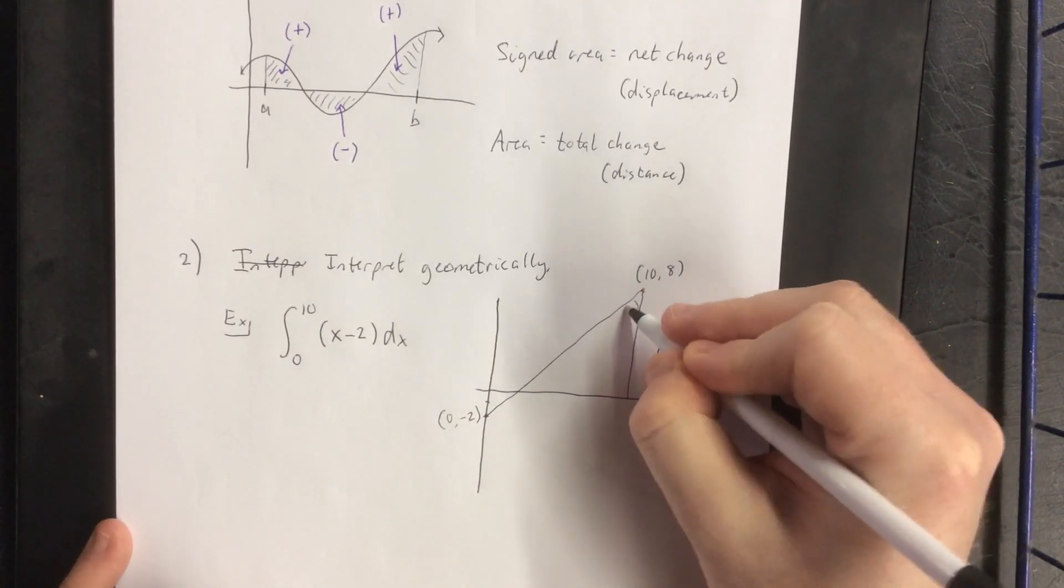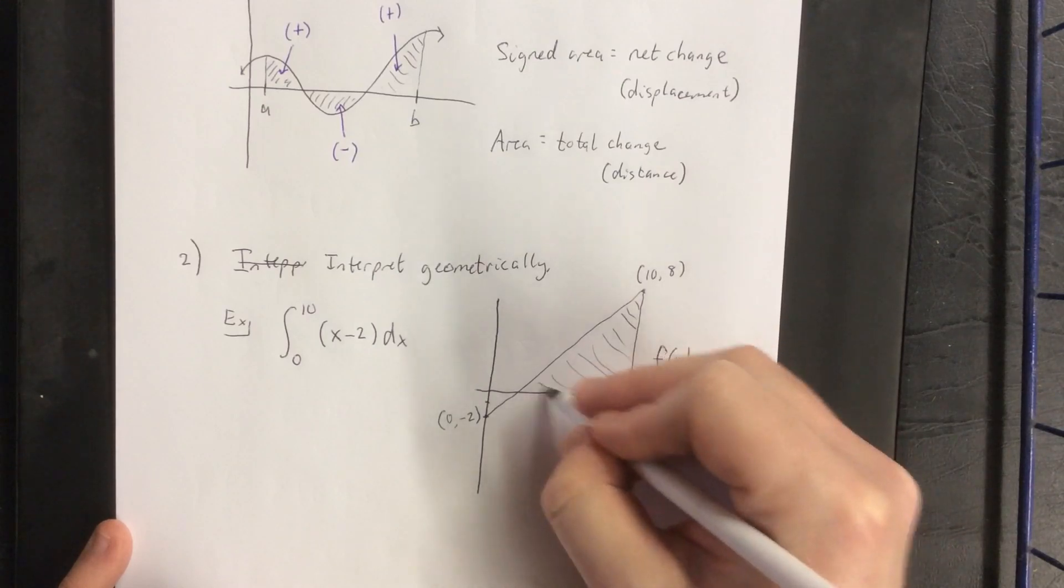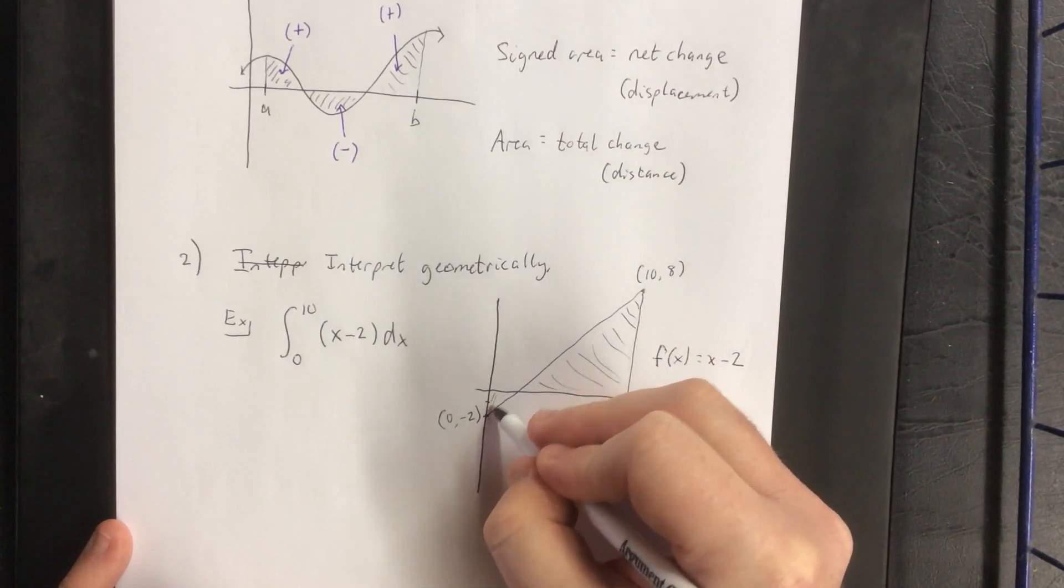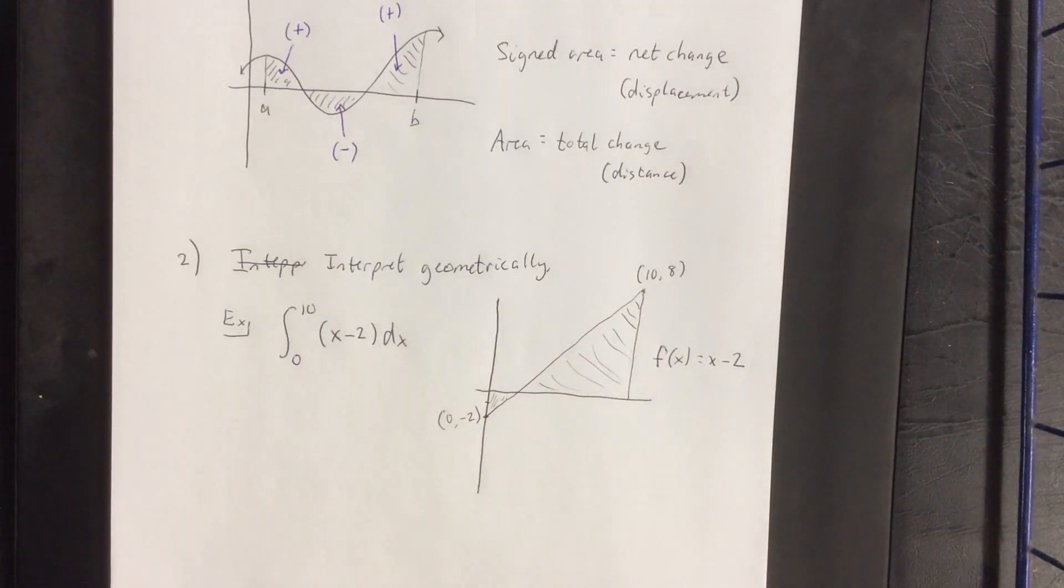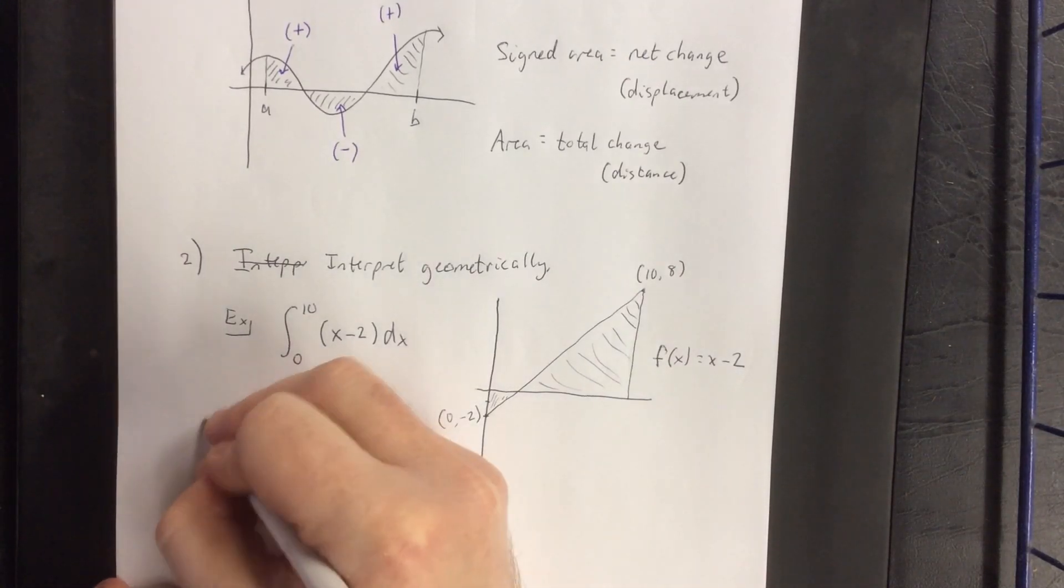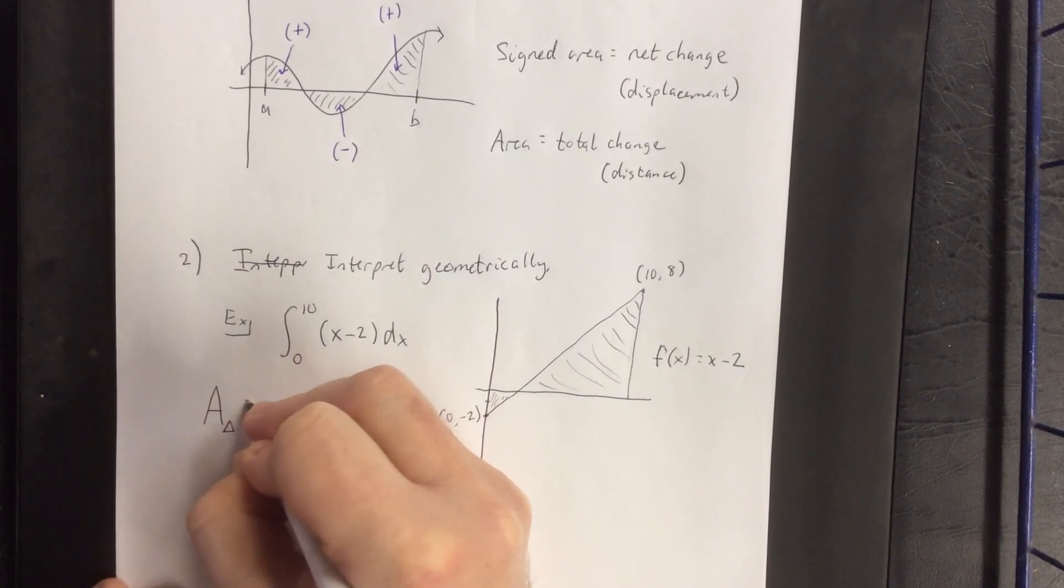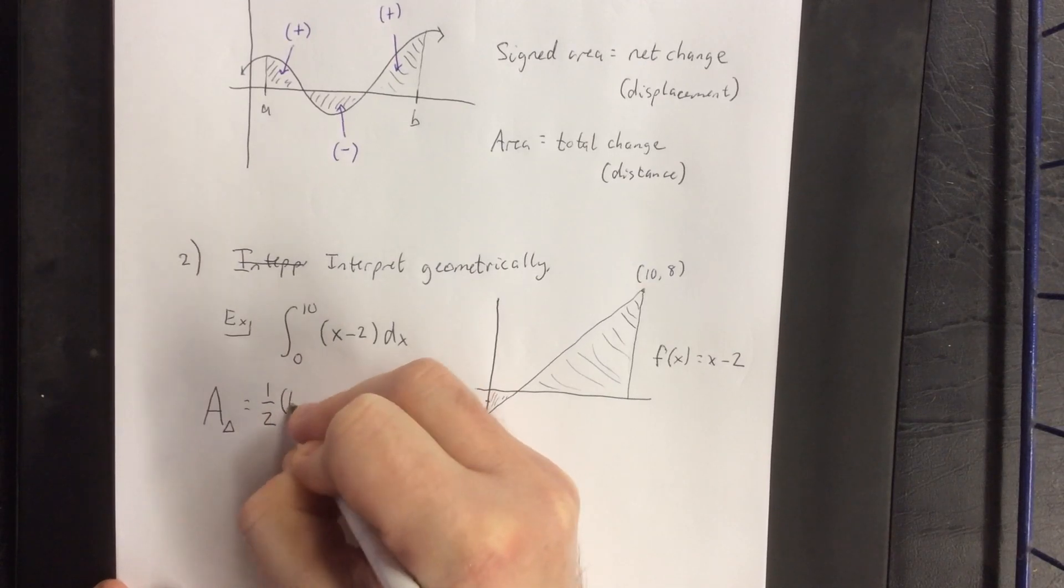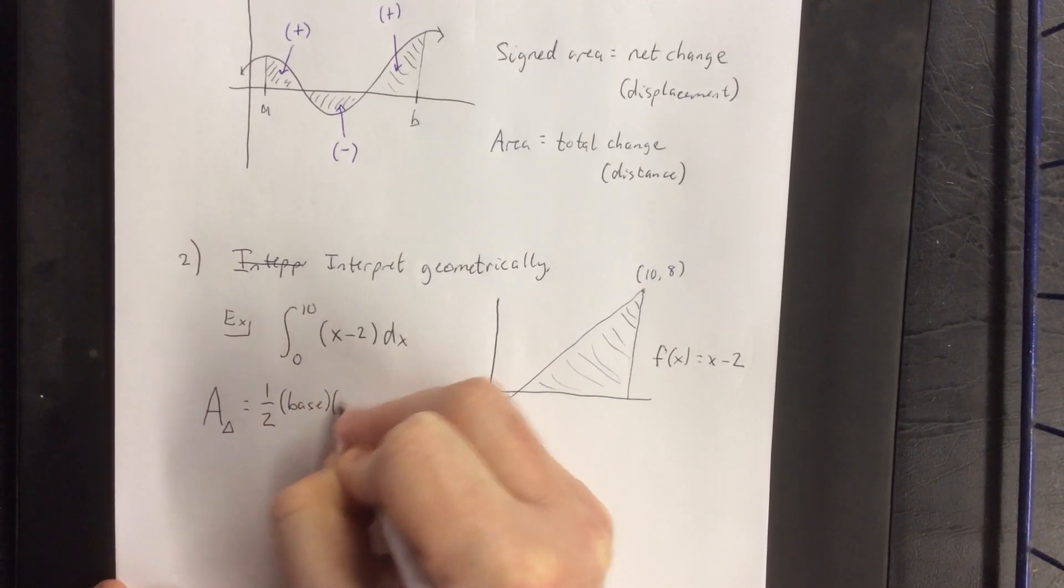So the area in question would be this nice big positive triangle and this little tiny negative triangle right here. Now as a quick reminder, the area of a triangle formula that we'll be making use of is 1 half times the base times the height.